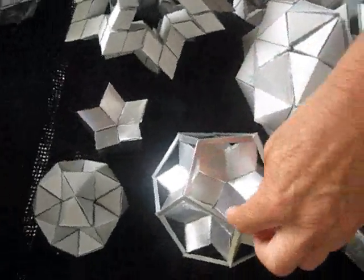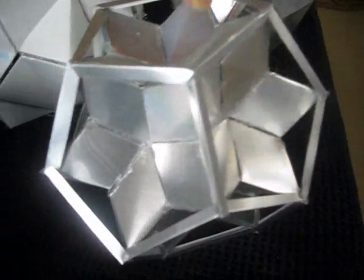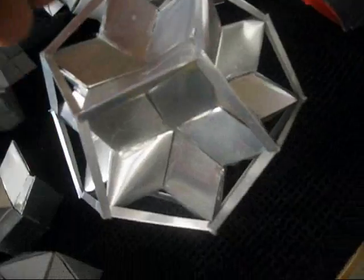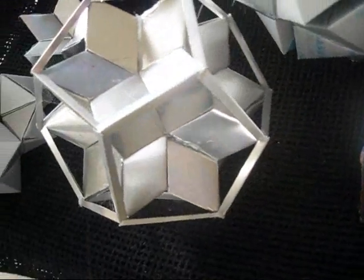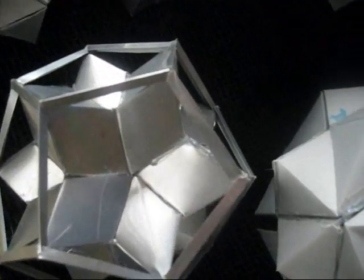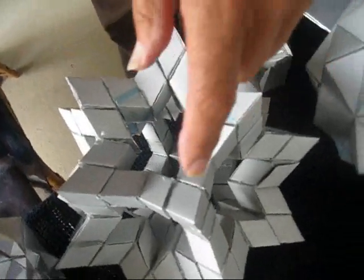Here we have twenty rhombohedra which make the hexacontahedron or the rhombic hexacontahedron and framed inside the pentadodecahedron. Over here we have a two frequency version of a rhombic hexacontahedron.